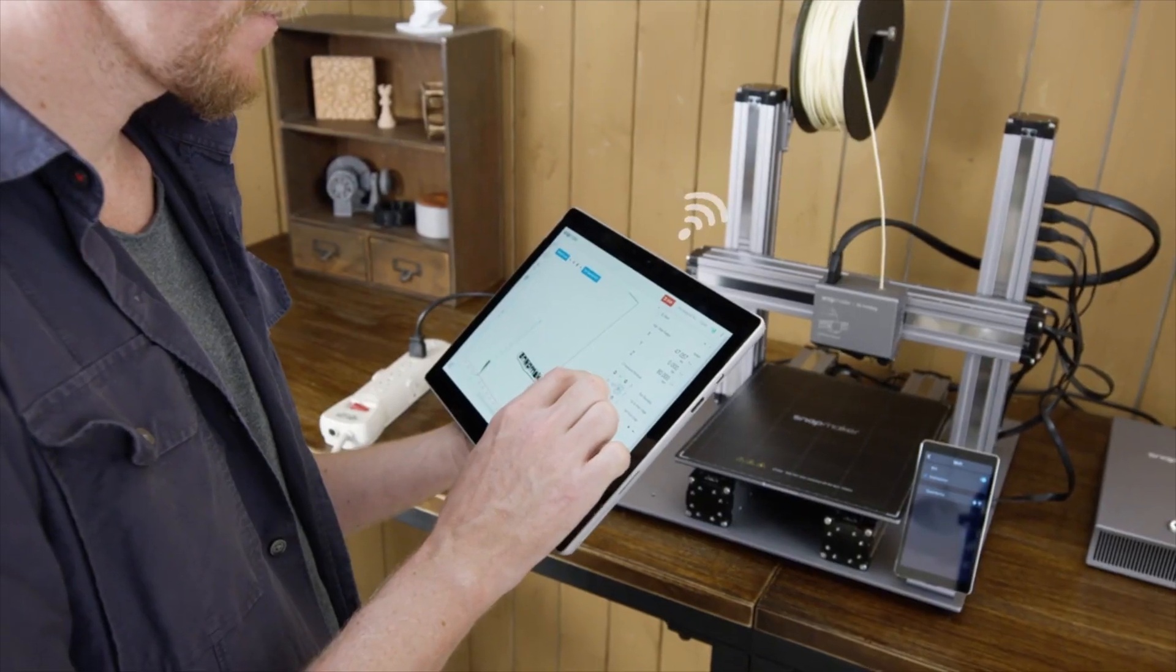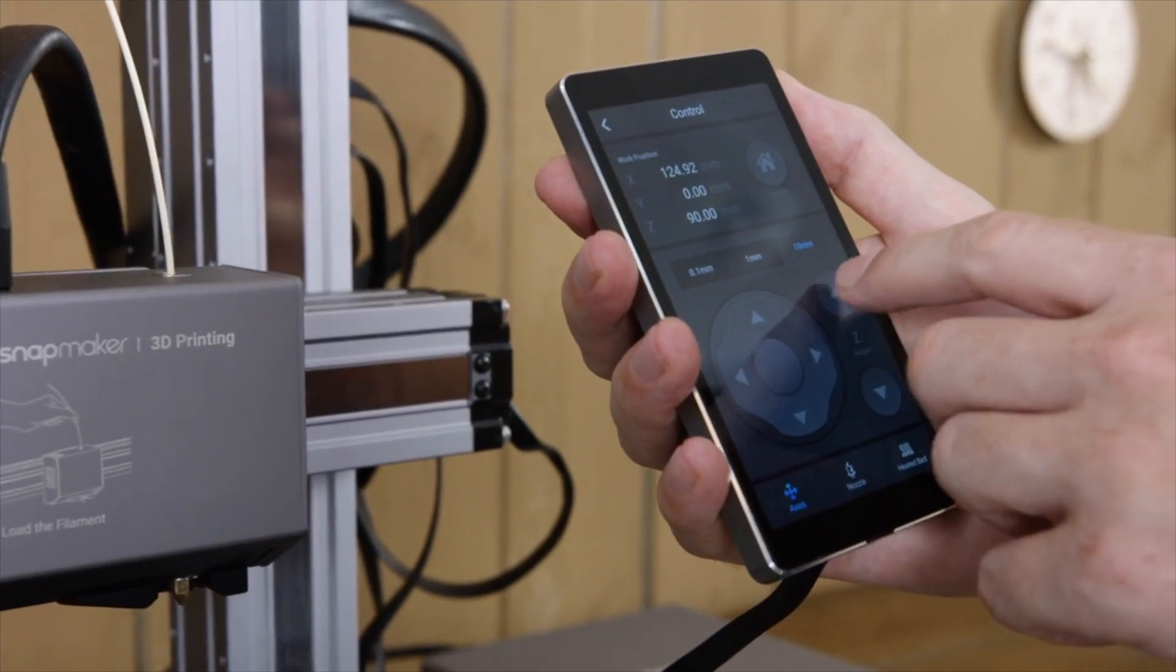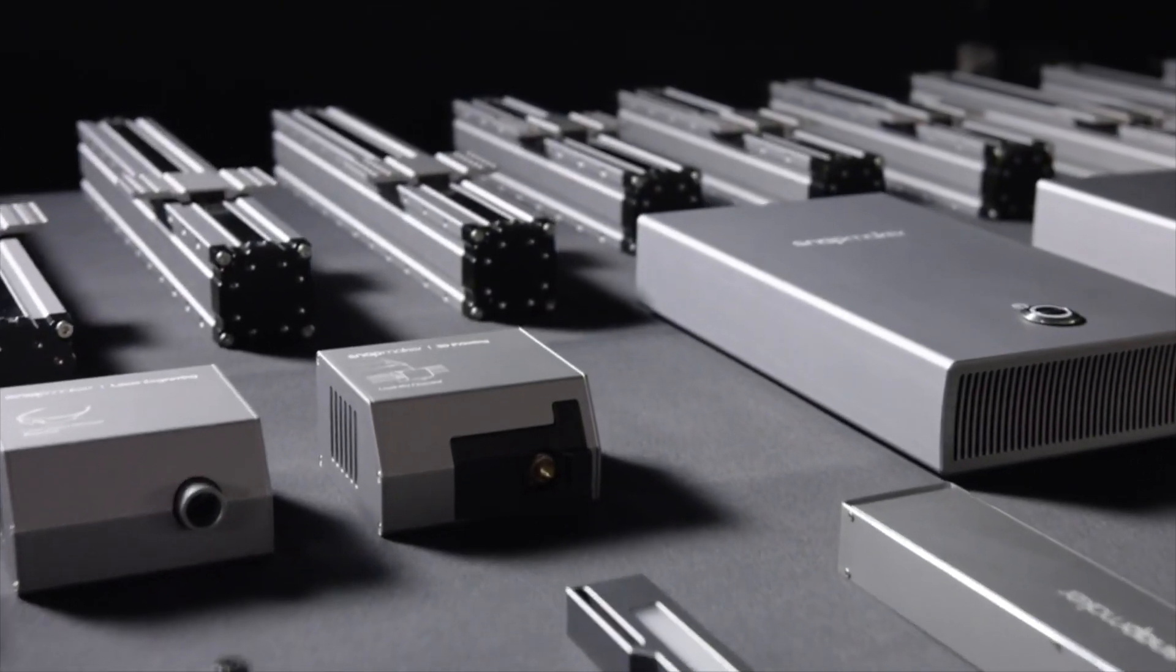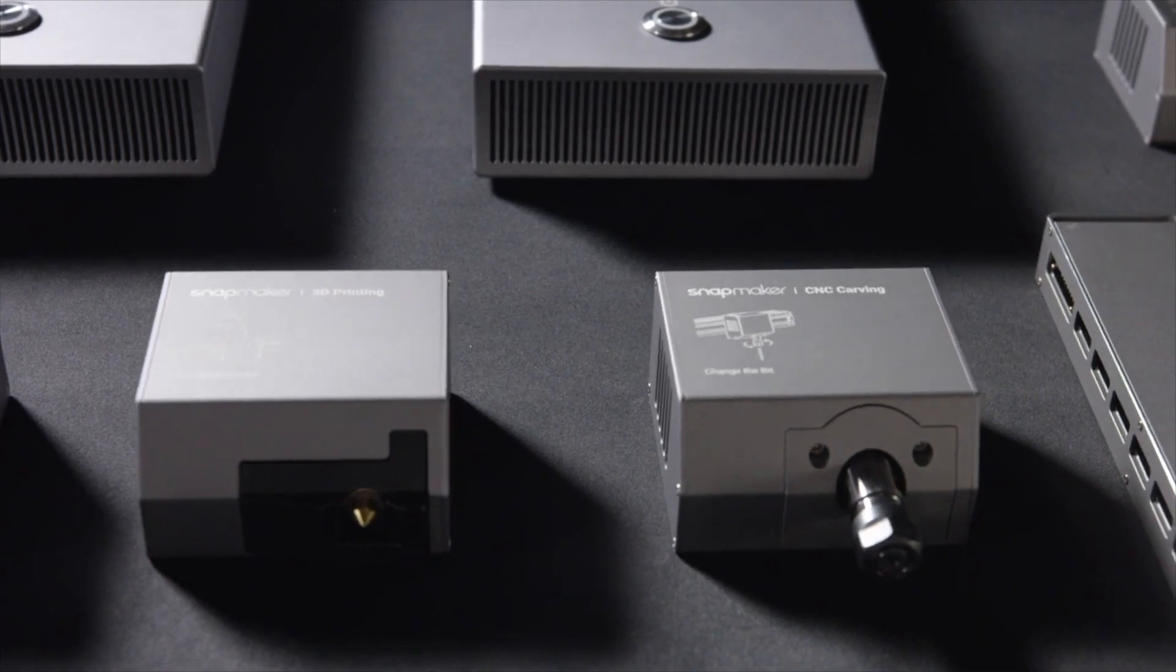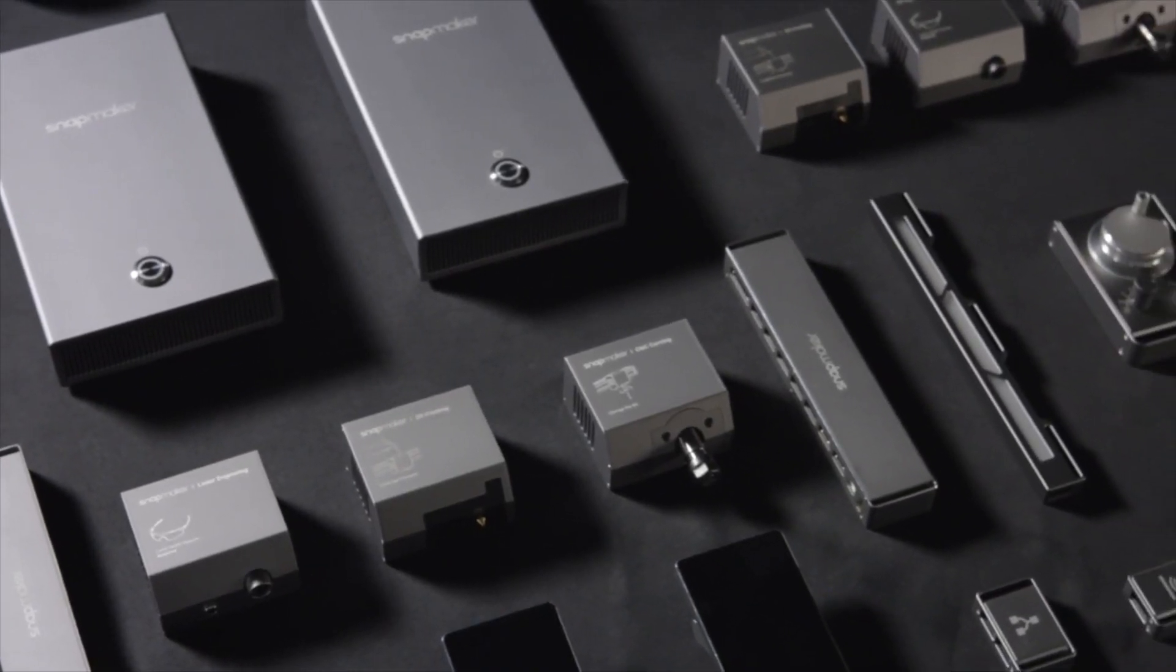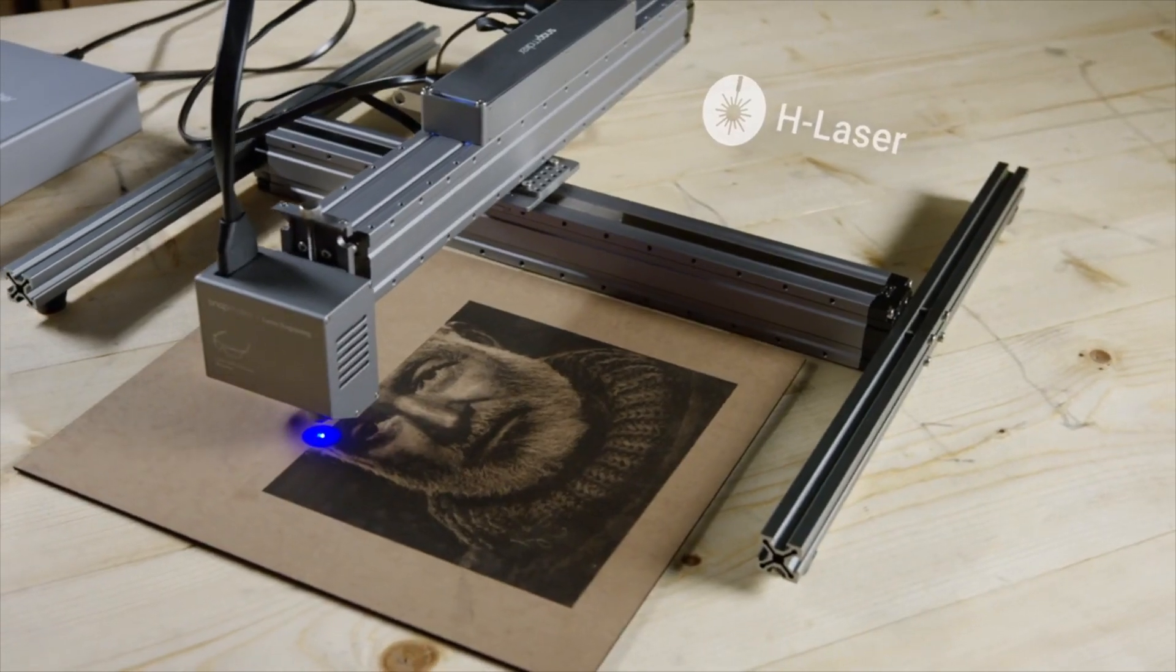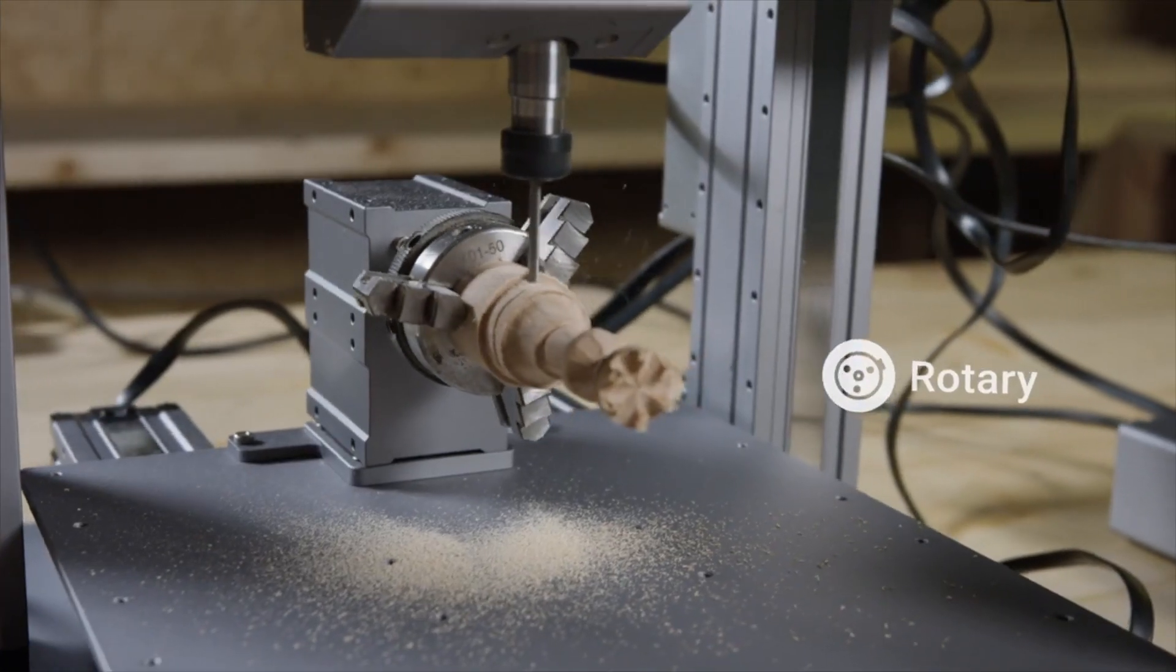You can also connect and control your Snapmaker via Wi-Fi or with the smart touchscreen. Snapmaker is more than just a series of machines. It's a system of powerful modules and add-ons for creative people like you. You can make an extra large CNC router, a huge laser engraver and even a four axis CNC machine.